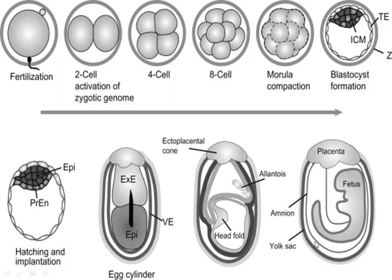The cavity formed is called blastocoel. This is called blastocoel. There is then the formation of the fetus. This is the placenta, this is the umbilical cord, and this is the fetus. This entire process is called embryogenesis.